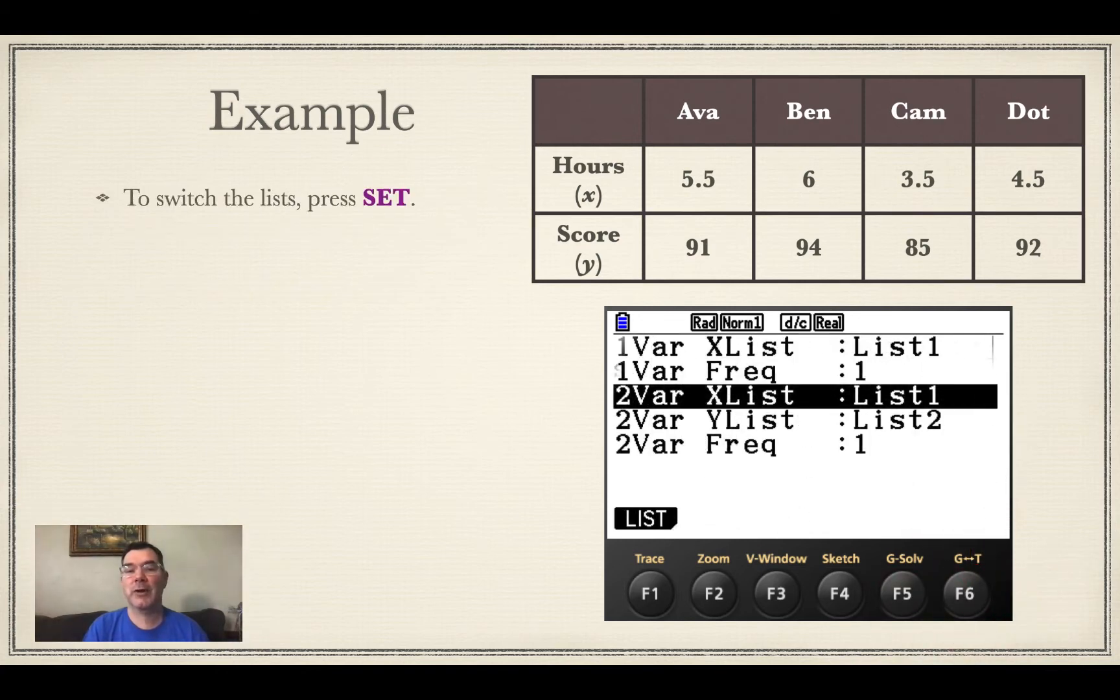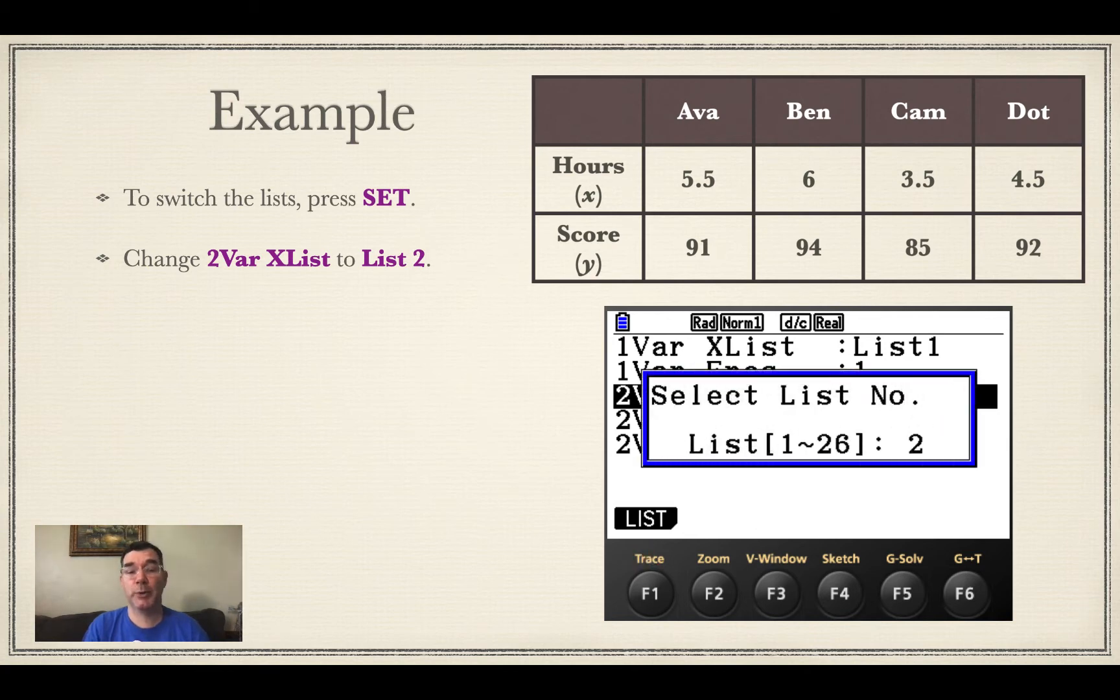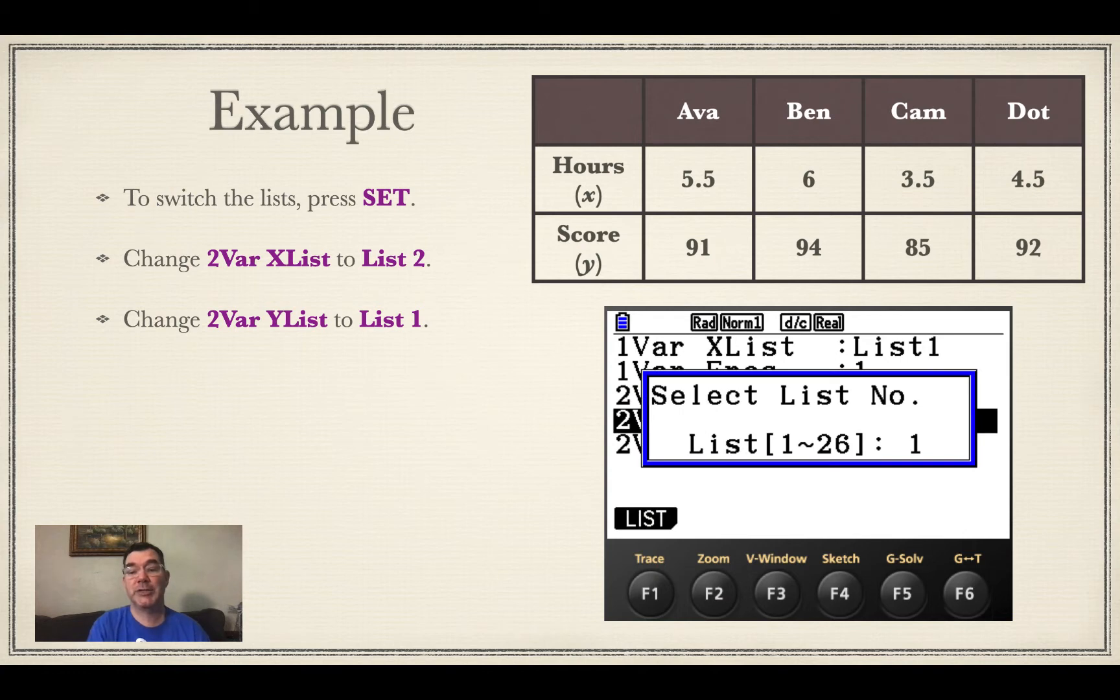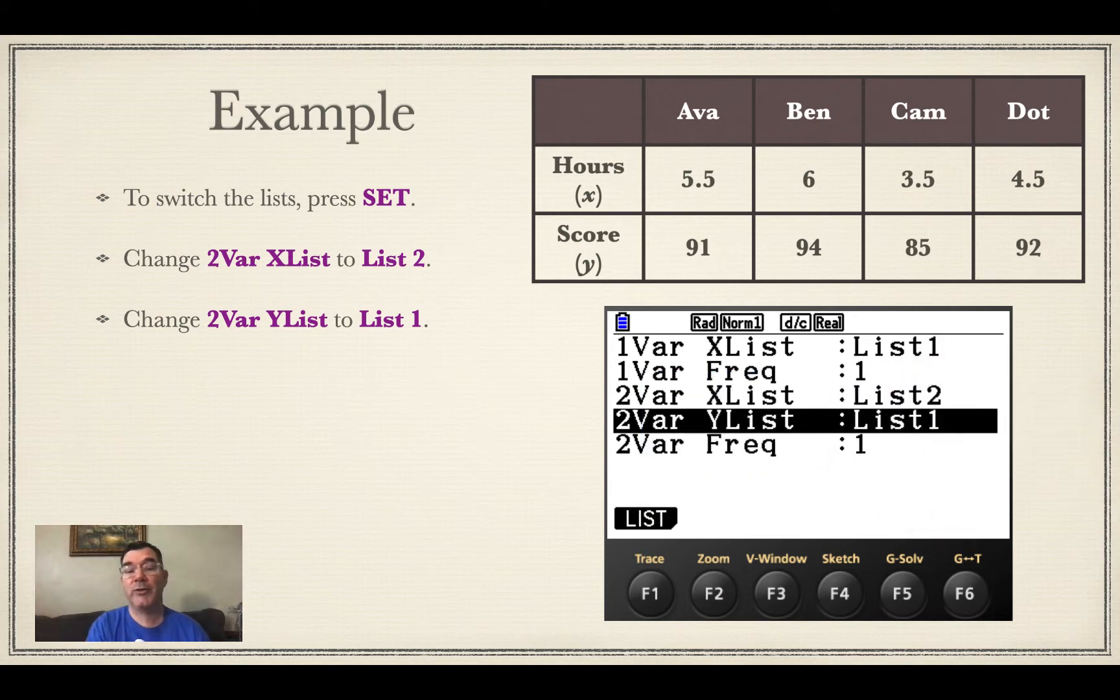Alright, so let me show you first of all how to switch those lists around. I go to set and notice how it's set up there. I do have two variables in my list. So I'm changing the two variable X list to list 2 and I change the two variable Y list to list 1. Alright, so now they're switched.